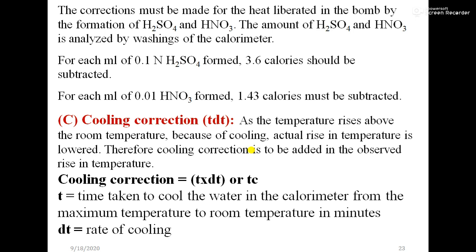The correction must be made for heat liberated in the bomb by formation of H2SO4 and HNO3. The amount of H2SO4 and nitric acid is analyzed by washing of calorimeter.